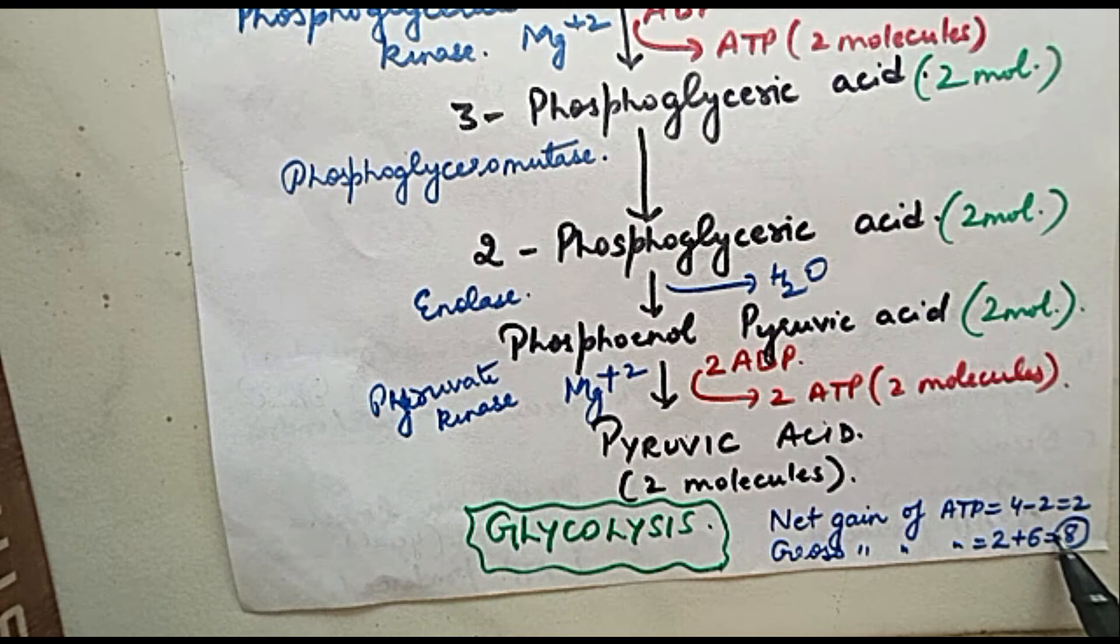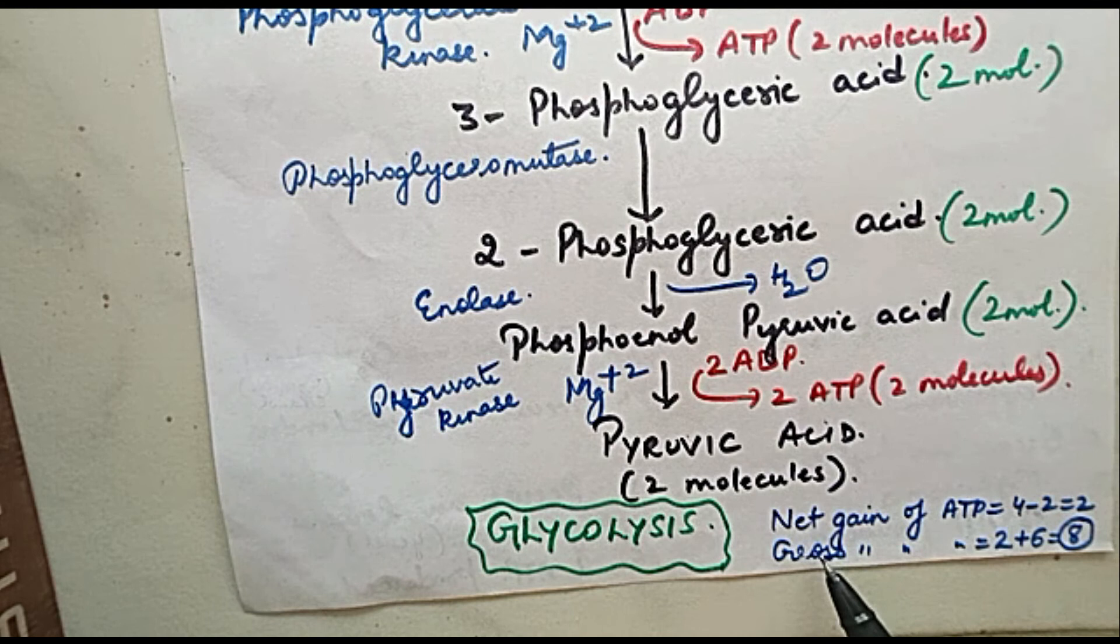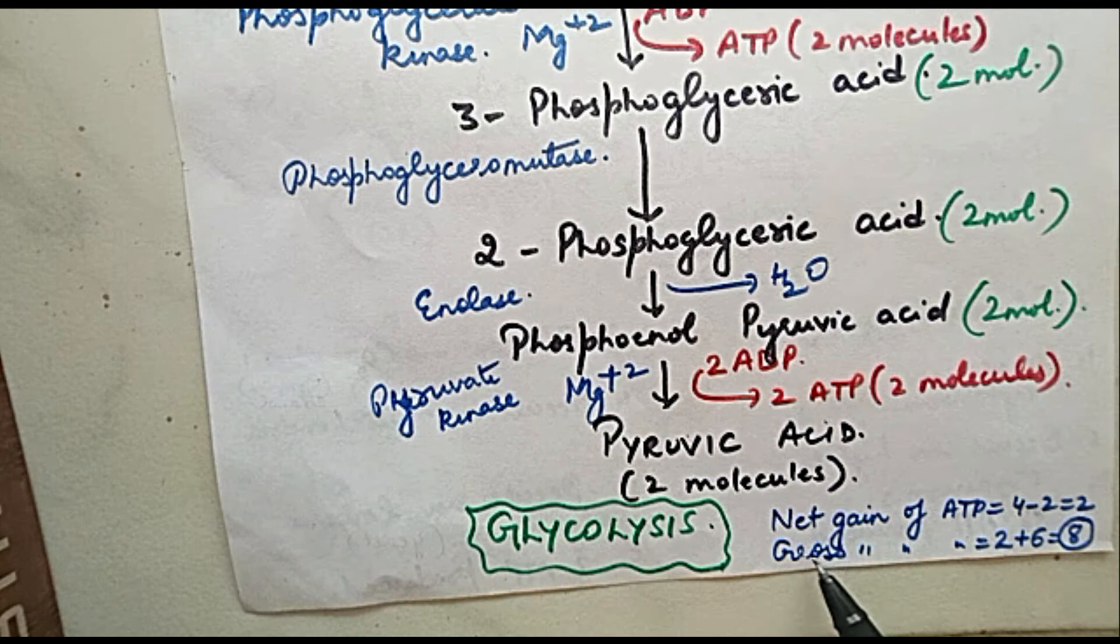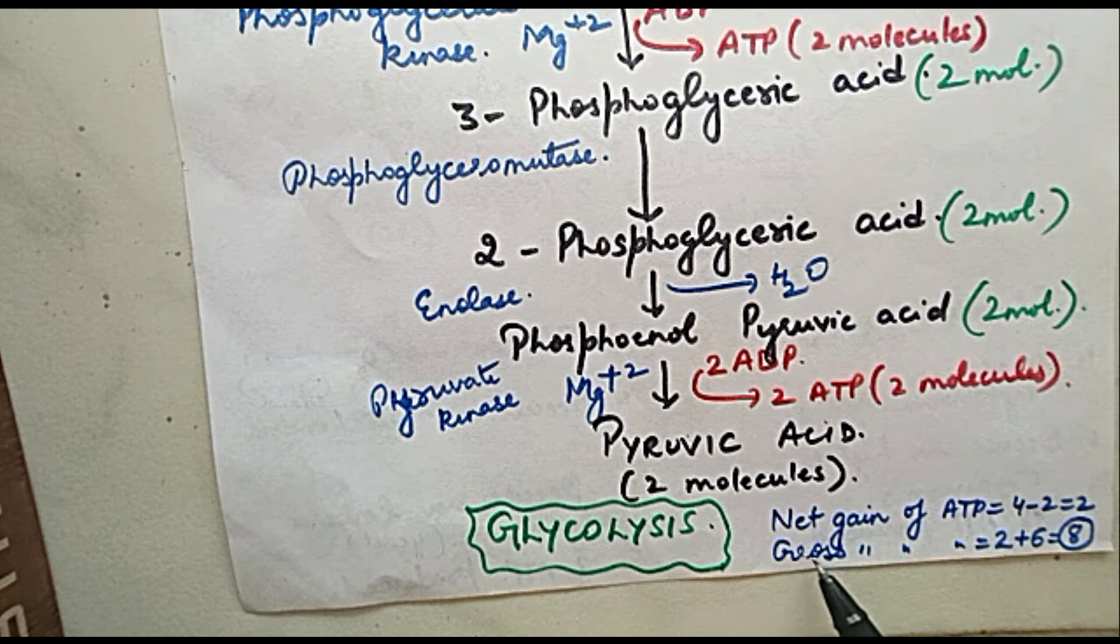So don't confuse these two things. Net gain of ATP is 2, gross gain of ATP during glycolysis is 8 ATP. Try to understand the topic properly by looking at the video.